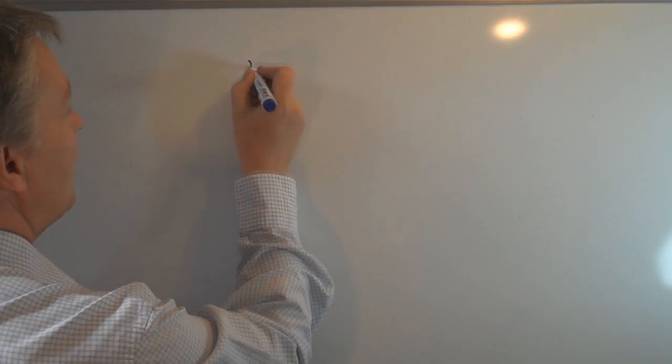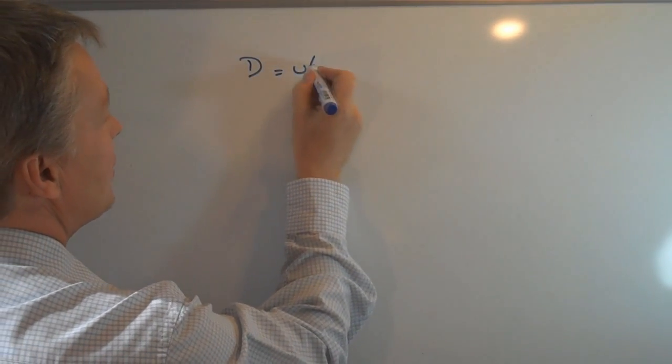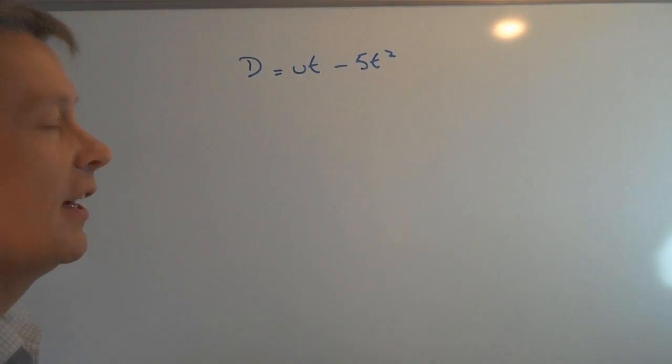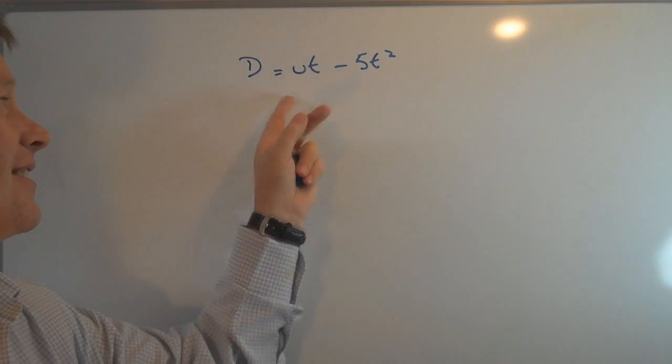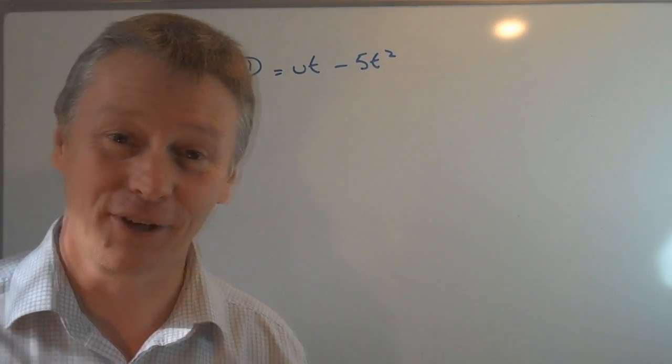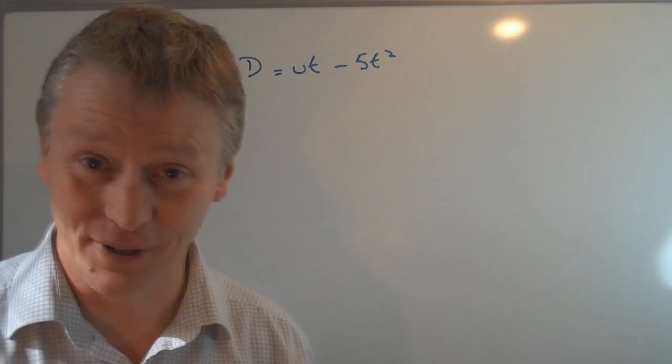So let's look at a formula that's used quite a lot in physics: d equals ut minus 5t squared. I can't quite remember what these stand for but it's distance equals something times time, and perhaps if somebody can leave a comment let me know what u stands for that would be very helpful.